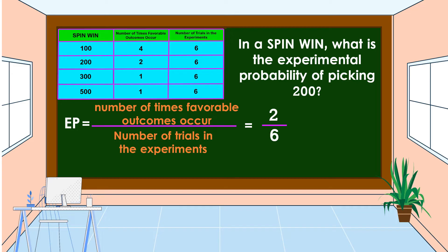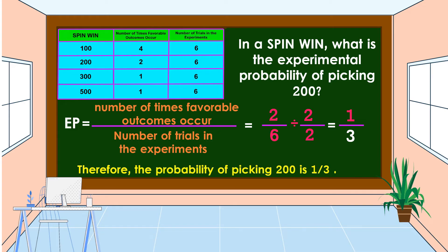2 and 6 are both divisible by 2. 2 divided by 2 is equal to 1, and 6 divided by 2 is equal to 3. Therefore, the probability of picking 200 is one-third. One-third in percent is 33 percent. 33 percent is lower than 50 percent, so the probability of picking 200 is unlikely to happen.